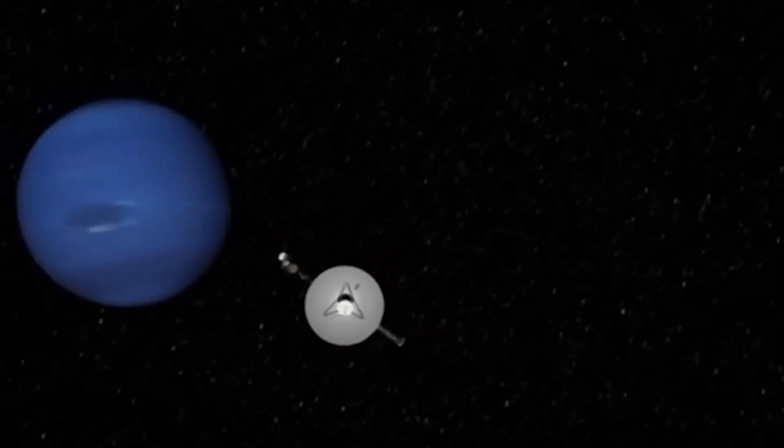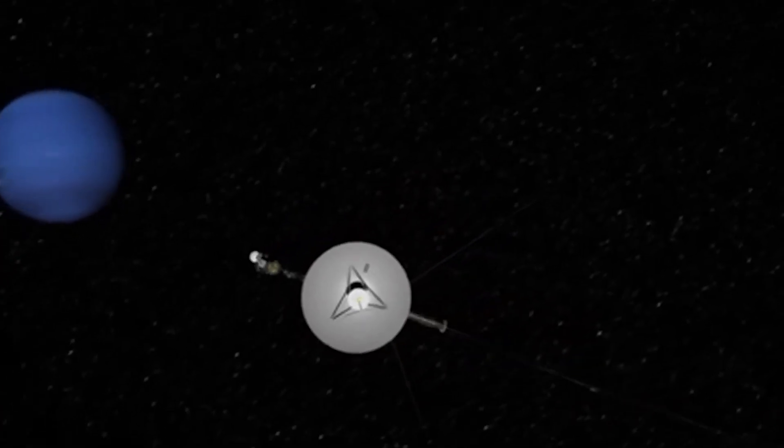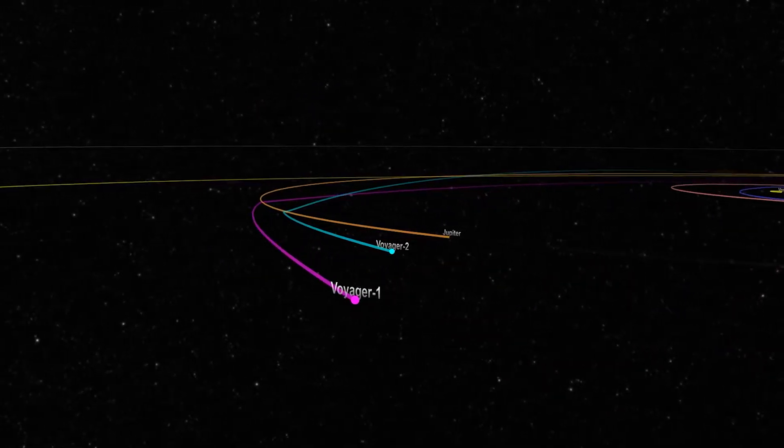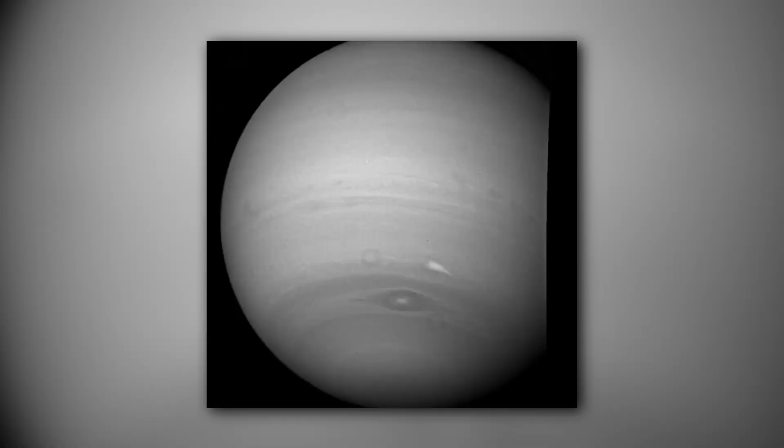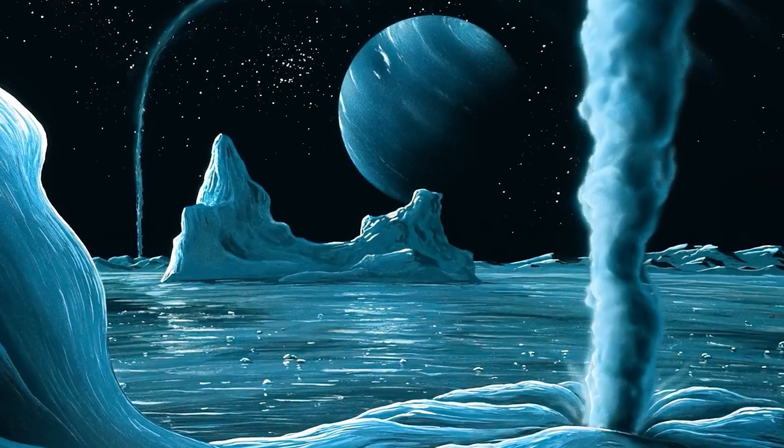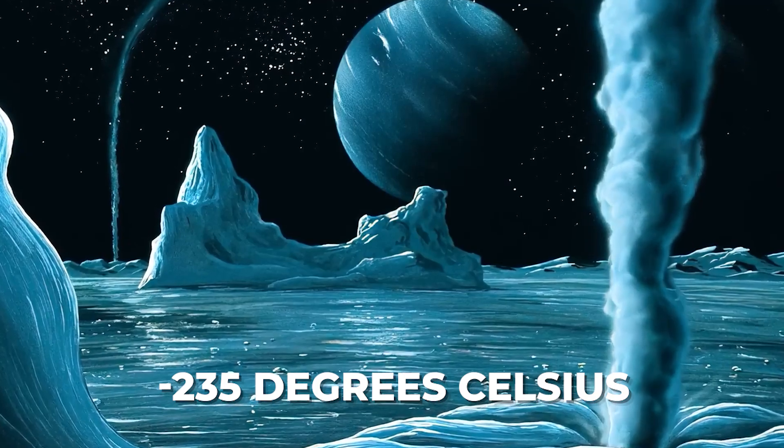As Voyager 2 approached Neptune, it ventured within 2,980 miles of the planet's Azure Methane-Rich Atmosphere, unveiling unprecedented insights into this distant world. Neptune's largest moon, Triton, emerged as one of the solar system's coldest places, with surface temperatures plummeting to minus 391 degrees Fahrenheit, minus 235 degrees Celsius.